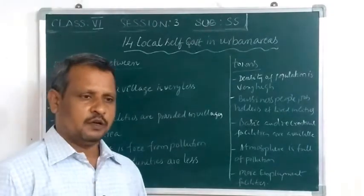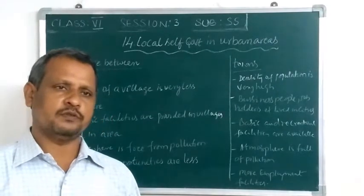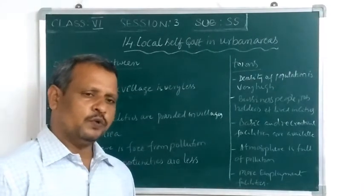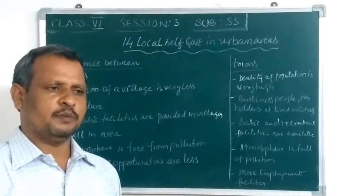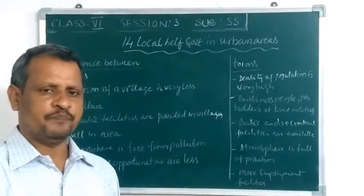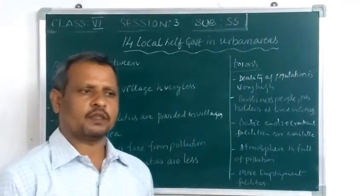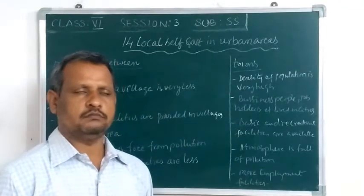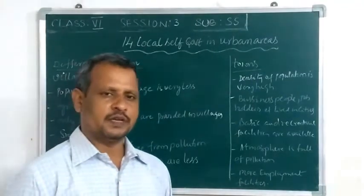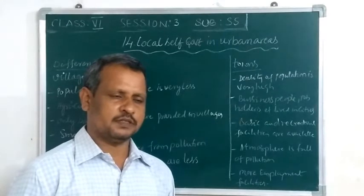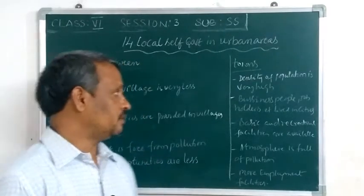What is meant by density of population? It is the population living per square kilometer or unit of area. Which state has the highest density of population in India? Bihar, with 1102 persons per square kilometer. Which state has the lowest density of population in India? Arunachal Pradesh.